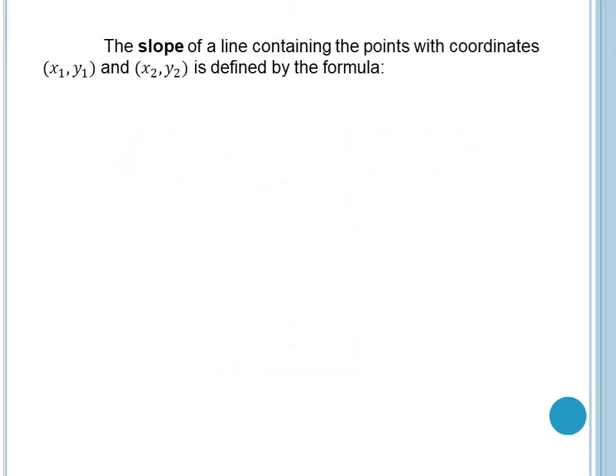The slope of a line containing the points with coordinates x sub 1, y sub 1, and x sub 2, y sub 2 is defined by the formula: m is equal to y sub 2 minus y sub 1 over x sub 2 minus x sub 1. The word slope is denoted by small m — not capital M, but small m — where x sub 2 is not equal to x sub 1.